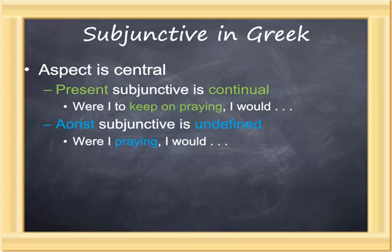Working with the subjunctive in Greek, aspect is central. There will only be present and aorist subjunctives — no imperfect, no future, no perfect, just present and aorist. The distinction between present and aorist in terms of aspect becomes critical. A present subjunctive is generally continual: "Were I to keep on praying, I would." But an aorist subjunctive is undefined: "Were I praying, I would." Both sentences talk about possible activity. When the present tense is used, that activity is ongoing; when the aorist tense is used, it is undefined.